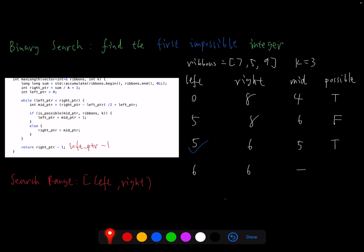And then here the template is mid pointer. Then if it's possible, we propagate left pointer. Otherwise we propagate right pointer. Eventually we find the first impossible integer, then we do minus one. Here I use right pointer minus one, but I think left pointer minus one also makes sense based on my definition and both two will work.